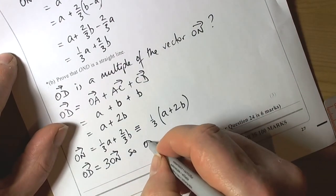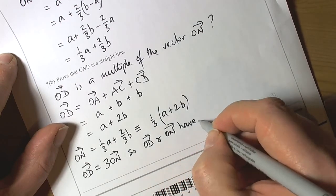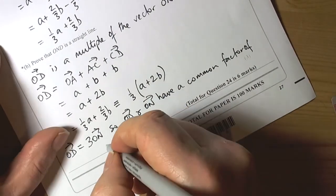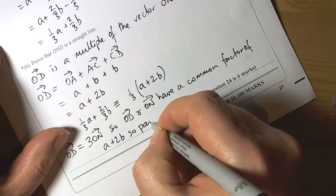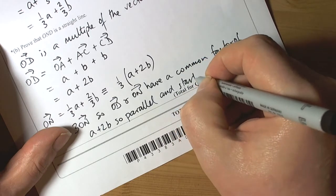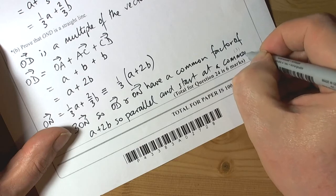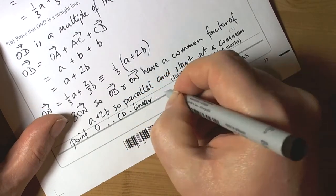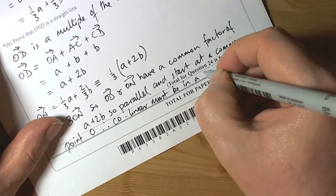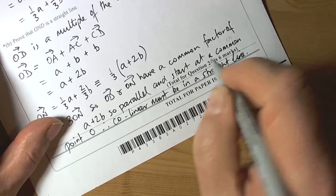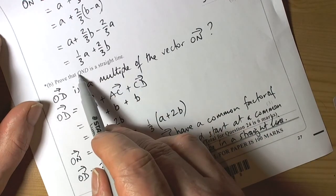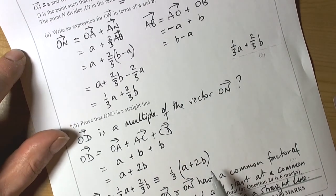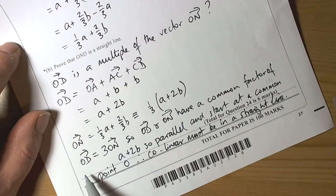So OD and ON have a common factor of a plus 2b, so parallel and start at a common point, therefore collinear, must be in a straight line. So that's the way that we prove that three points are in a straight line, is by proving that the vectors that connect those points are multiples of each other, hence parallel, and because they start a common point, then they must also be on a straight line.